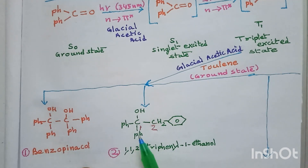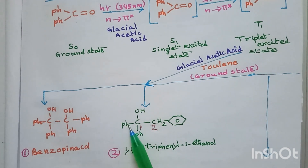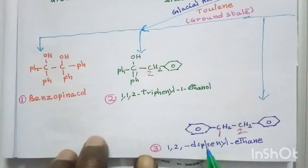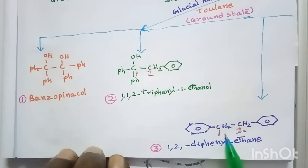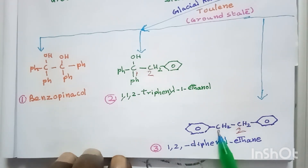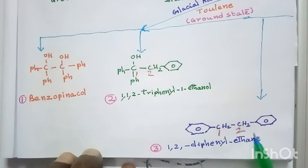Two molecules of benzophenone (Ph₂C=O) abstract two hydrogen atoms from toluene to become Ph₂CHOH — benzhydrol. The product 1,1,2-triphenylethanol has the structure Ph₂C(OH)–CH₂–C₆H₅, where one phenyl group is on the first carbon atom and one phenyl group is on the second carbon atom. That is why the third product is called 1,2-diphenylethane — because there are two carbon atoms. Let us see the mechanism.